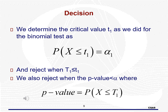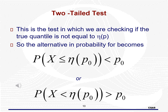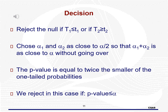The two-tailed test uses the not-equal-to alternative, which equates to either the hypothesized quantile being larger or smaller than the true value. We reject the null if T1 is less than or equal to the lower critical value, or if T2 is greater than or equal to the upper critical value. We find T1 and T2 using alpha1 and alpha2 as close to alpha/2 as possible, so that alpha1 plus alpha2 is as close to alpha without going over, making the test conservative. The p-value is twice the smaller of the one-tailed probabilities, and we reject when p-value is less than or equal to alpha.